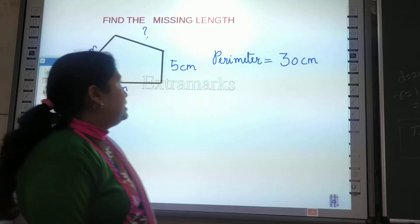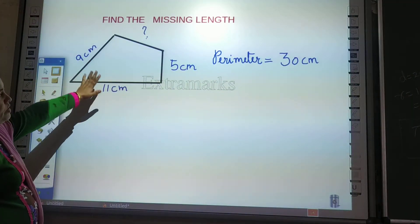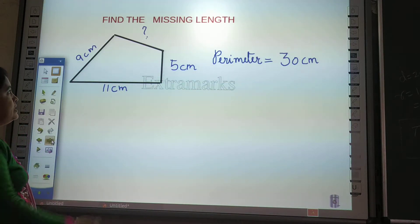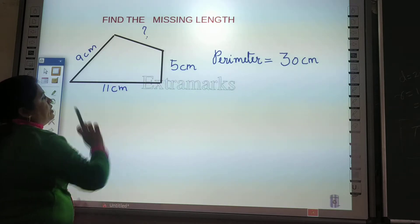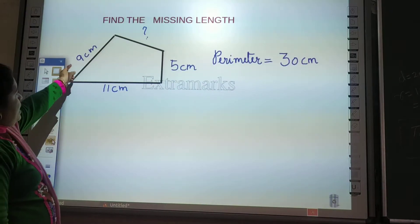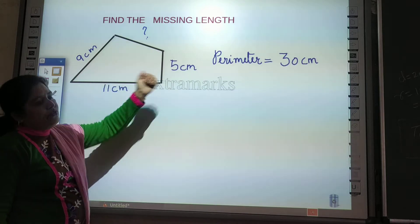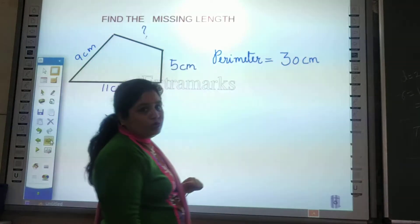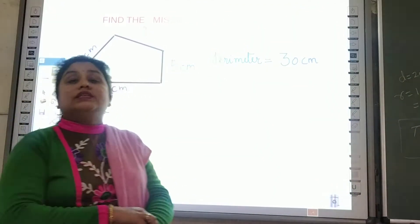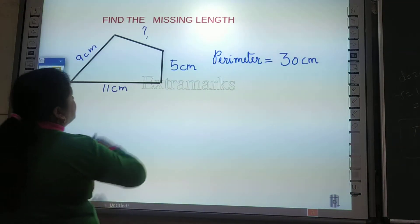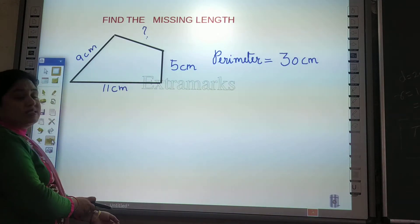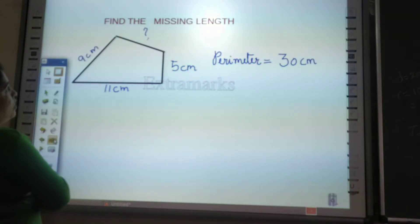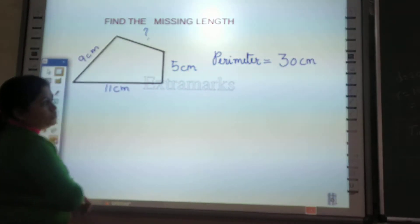Now look here — find the missing length. The question is given. A 4-sided figure is given where 3 sides are already given: 9 cm, 11 cm, and 5 cm. The length of the perimeter is also given. Now you are asked: what is the length of the missing side? You have to find out the length that is not given.